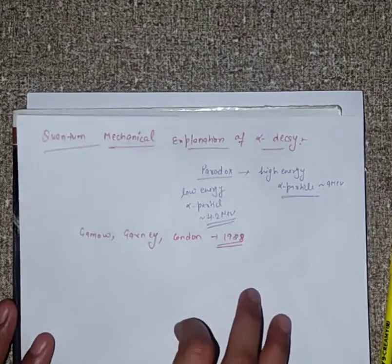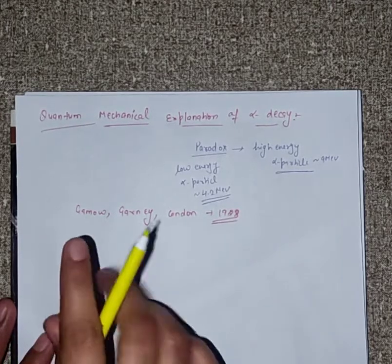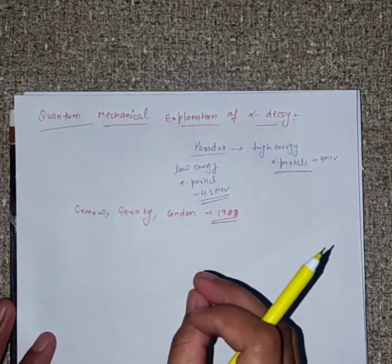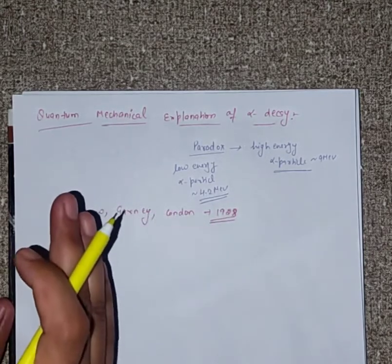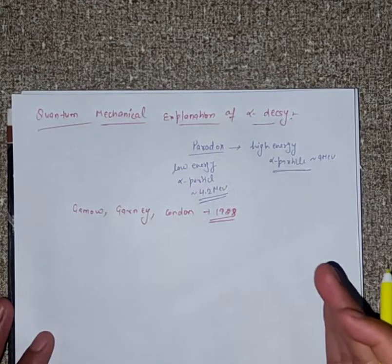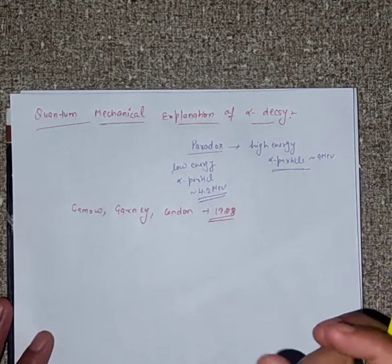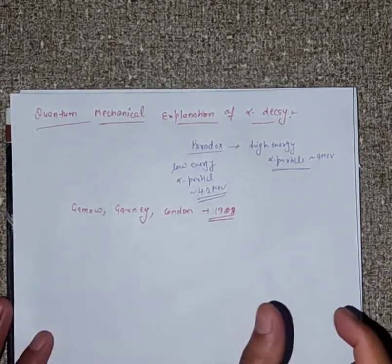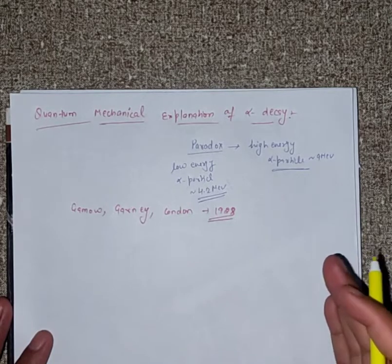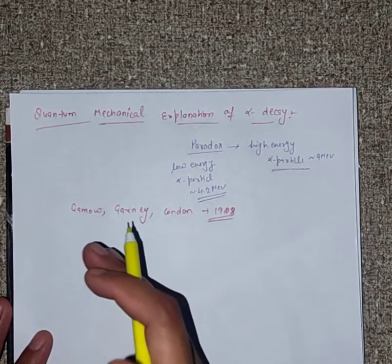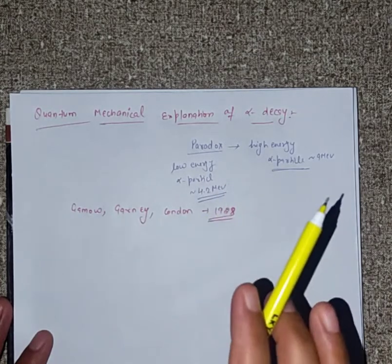The paradox was resolved by quantum mechanics. The key difference is that classical mechanics always talks about certainty — certain things. When we talk about quantum mechanics, we talk about probability and possibility. This is the difference: classical mechanics deals with certainty, quantum mechanics deals with probability.